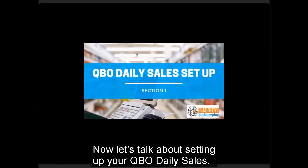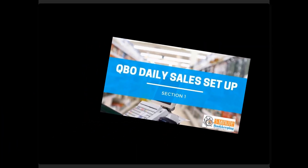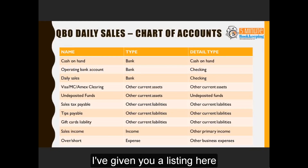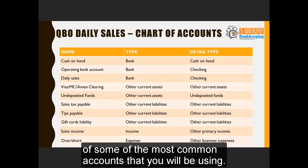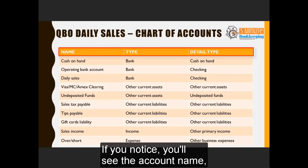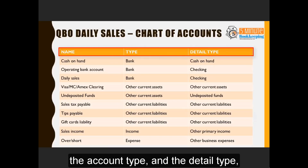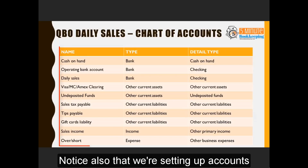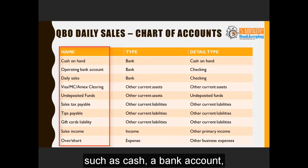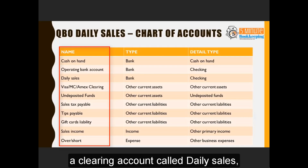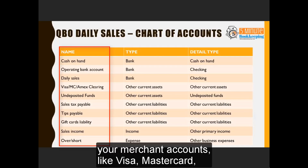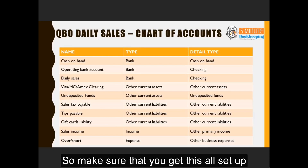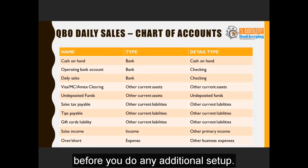Let's talk about setting up your QBO daily sales. First, you'll need to set up the accounts in the chart of accounts. I've given you a listing here of some of the most common accounts you will be using — the account name, account type, and detail type — so that you can set them up easily. Notice that we're setting up accounts such as cash, your bank account, a clearing account called Daily Sales, your merchant accounts like Visa and MasterCard, sales tax payable, tips payable, etc. Make sure you get this all set up in your chart of accounts first before doing any additional setup.